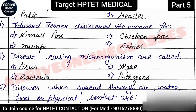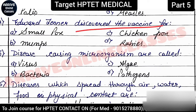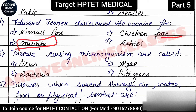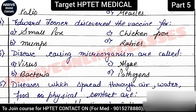Next question: 'Edward Jenner discovered the vaccine for?' If asked who is the Father of Vaccination, the answer is also Edward Jenner. He first discovered the vaccine for smallpox — option A is correct. Other diseases mentioned include mumps, chickenpox (also viral), and rabies — all viral diseases. Chickenpox is caused by Herpes zoster virus.